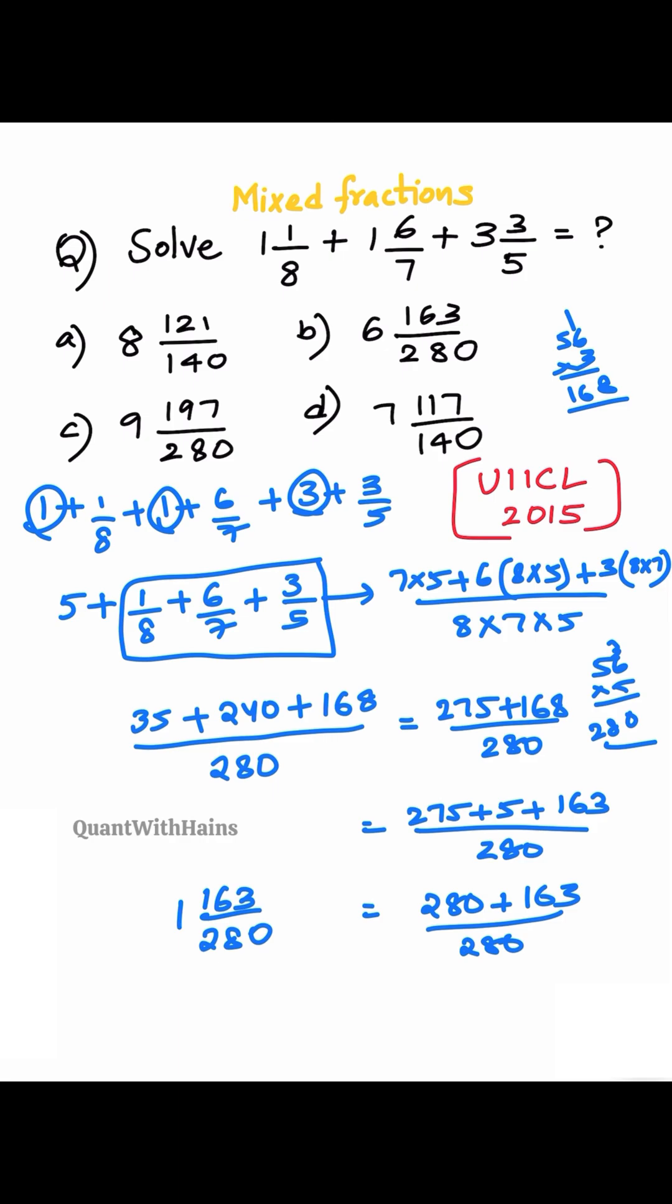Already we got 5. Now we need to add with this. That is 5 plus 163 by 280. That means 5 plus 1, 6 163/280. Our answer option B.